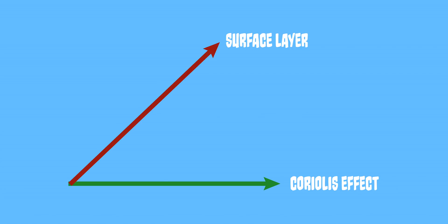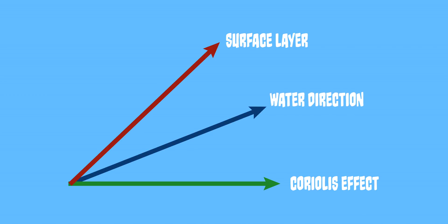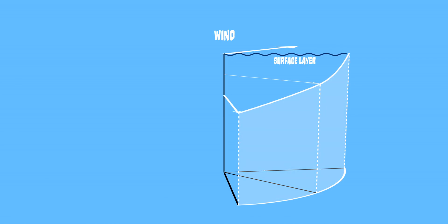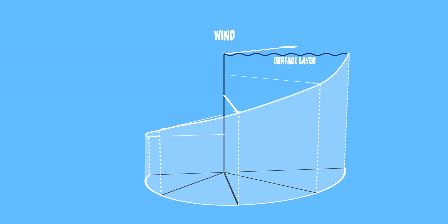Again, these two forces balance, and the resulting direction of this secondary layer is a little bit more than 45 degrees to the right. This process occurs in each subsequent layer of water, with deeper layers being pushed more and more to the right, while also losing energy. This results in what is known as the Ekman Spiral. Eventually, a depth is reached where the current has slowed enough that the residual current from the wind and the resistance of the water balance each other out. This depth is known as the Ekman depth, or the Ekman layer.